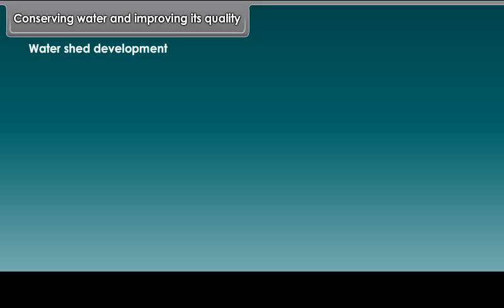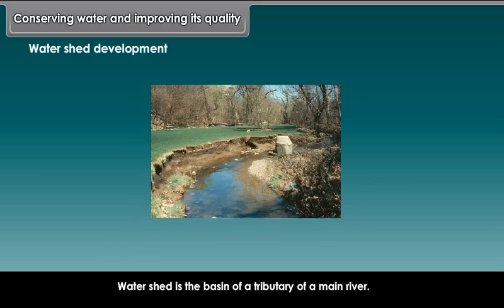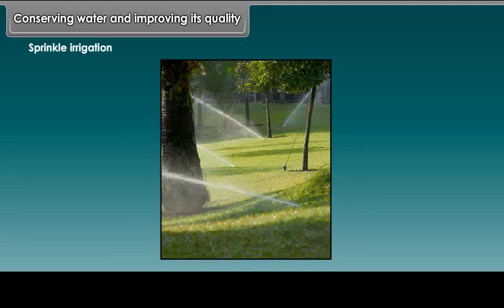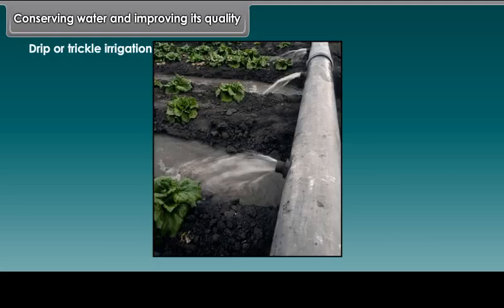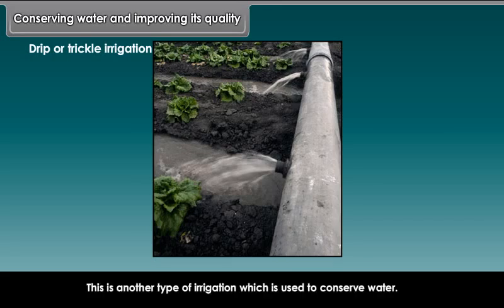Watershed Development. A watershed is the basin of a tributary of a main river. Sprinkler Irrigation is the most effective and efficient tool of irrigation. Drip or trickle irrigation is another type of irrigation used to conserve water. Water is supplied to plant roots through underground pipes.